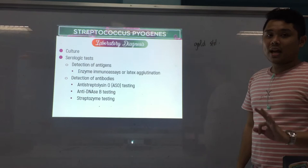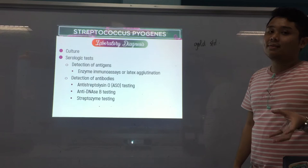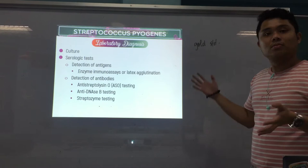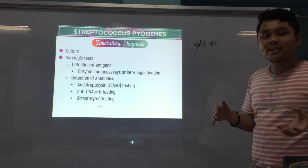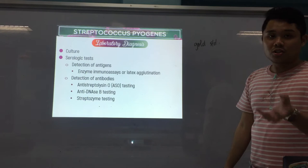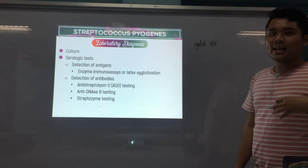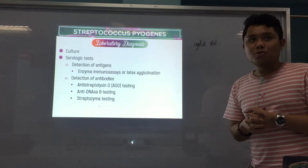Why is this important? Usually we perform serological tests to determine or check for sequelae — specifically, streptococcal sequelae such as acute glomerulonephritis or rheumatic heart fever. During this time, the pathogen is no longer found in the system of the patient, so culture will not be remarkable or helpful. That's why we turn our attention to serological tests.